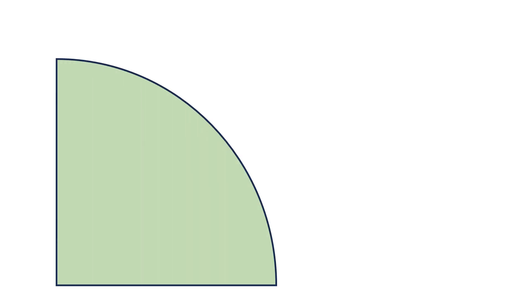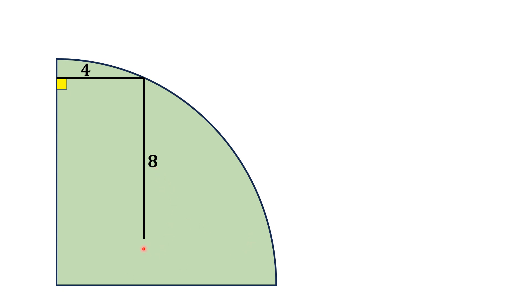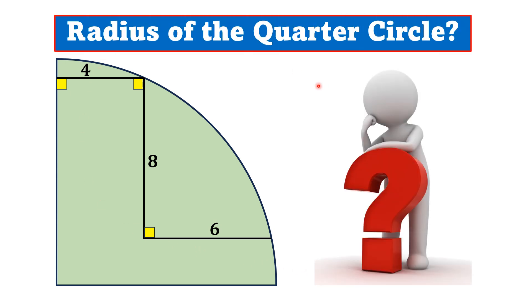Hello everyone. In this video, a quarter circle is given. Three line segments are placed in this quarter circle. The first one is parallel to this radius of the quarter circle and has length four units. The second line is perpendicular to this line and parallel to this radial segment, having length equal to eight units. The third line is again parallel to this radial line and perpendicular to the line having length eight units, and this line segment has length equal to six units. This angle is also 90 degrees. By this limited data, we have to find the radius of this quarter circle.